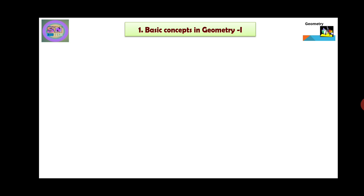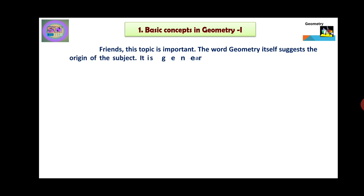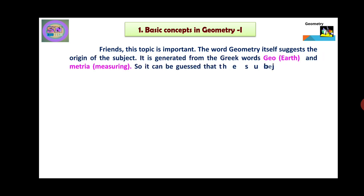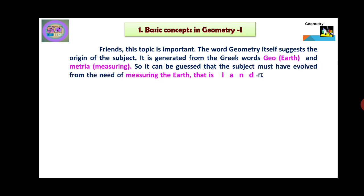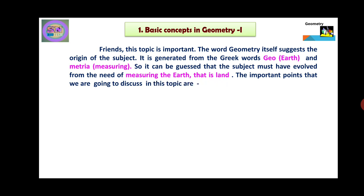Friends, in this Basic Concepts in Geometry part first, it is a very important topic. The word geometry itself suggests the origin of the subject. It is generated from the Greek word Geo, meaning Earth, and Maitria, meaning Measuring. So it can be guessed that the subject must have evolved from the need of measuring the Earth, that is the land.